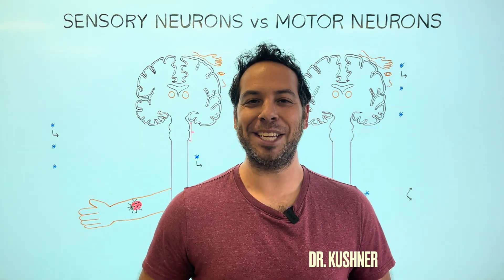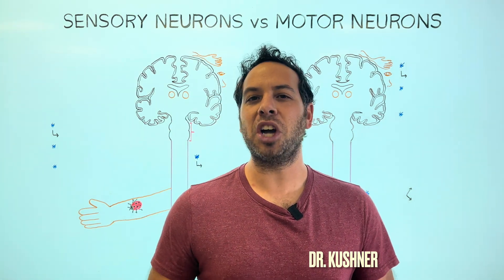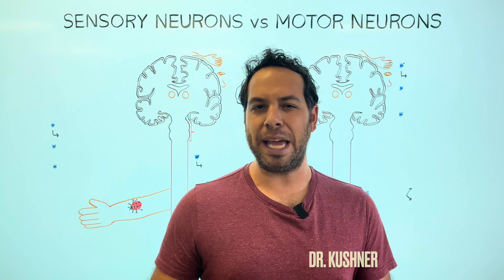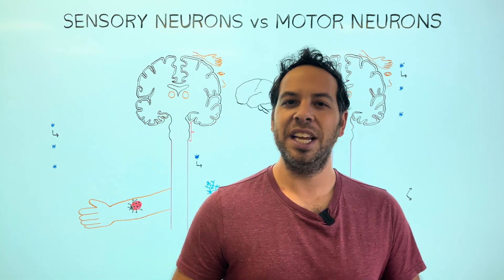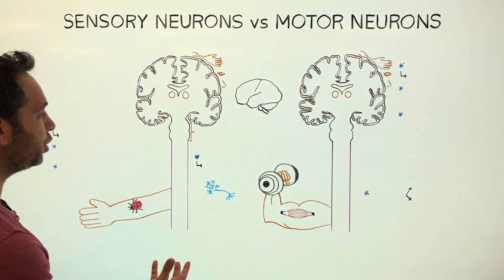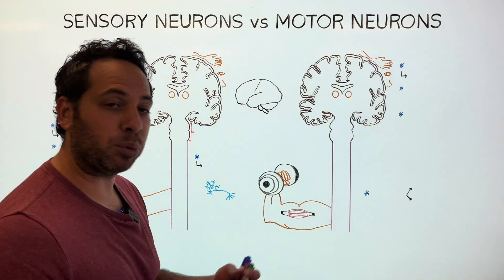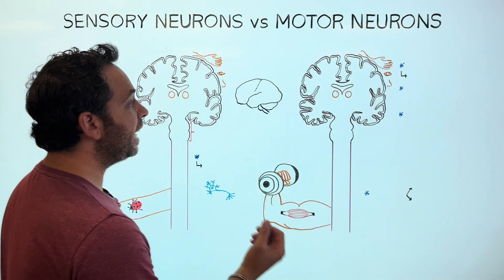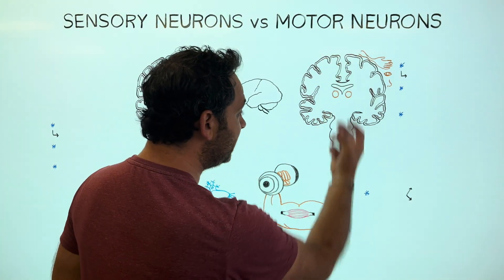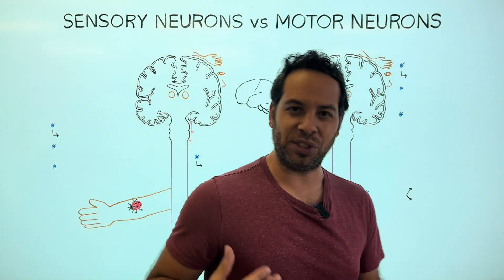Welcome to Psych Explained. In this video, we're going to talk about the difference between sensory and motor neurons — specifically, how information flows to the brain to be interpreted and processed, and how information flows away or descends from the brain to our muscles and glands.